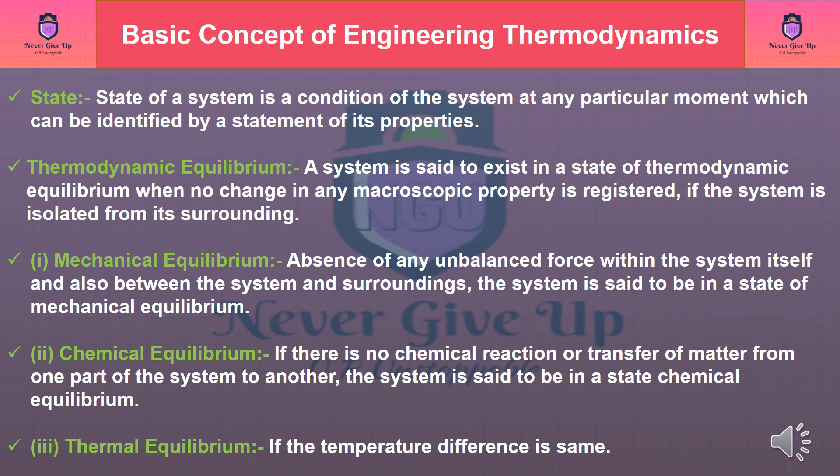Thermodynamic equilibrium: A system is said to exist in a state of thermodynamic equilibrium when no change in any macroscopic property is registered, if the system is isolated from its surroundings. Mechanical equilibrium: The absence of any unbalanced force within the system itself and also between the system and surroundings; the system is said to be in a state of mechanical equilibrium. Chemical equilibrium: If there is no chemical reaction or transfer of matter from one part of the system to another, the system is said to be in a state of chemical equilibrium.